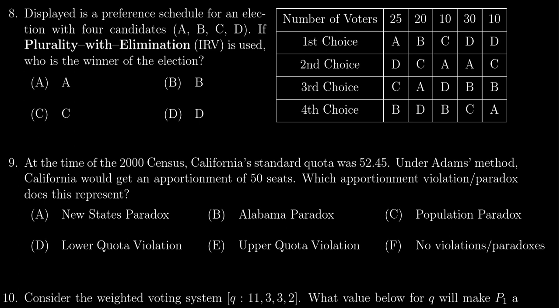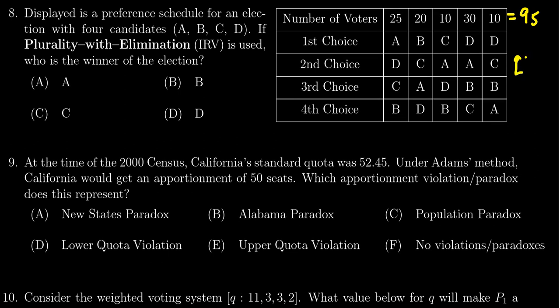The first thing we have to do is determine how many votes are in this election. Adding those numbers together: 25 plus 20 plus 10 plus 30 plus 10 gives you 95. If we cut that in half we're looking for 47.5, so the quota to be the winner is 48 votes.